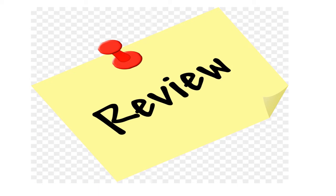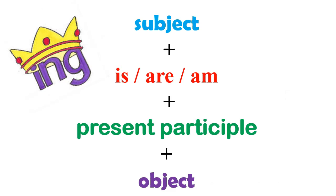You have learned how to make both positive and negative sentences using present continuous tense. Let's review. For positive sentences, you need: a subject, helping verb is/are/am, the present participle (ing) form of the verb, and an object. For example: I am doing my work. She is watching TV. They are playing outside.